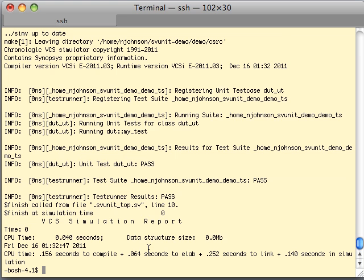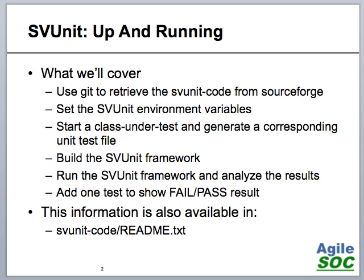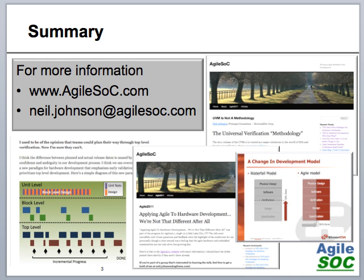So that's as far as we'll go here. Just to do a little review of what we've done: we used git to retrieve the SVUnit source code from SourceForge; we used the setup.bash script to set up the SVUnit environment variable and path; we started a simple class under test and generated a corresponding unit test file; we built and ran the SVUnit framework with the out-of-the-box configuration and looked at the three levels of SVUnit hierarchy — the unit test, the test suite, and the test runner. Then we added a failing test and a passing test and took a look at the results. That takes us to the end of part one of the SVUnit demo series on AgileSoC.com. I'm Neil Johnson, thanks for watching.